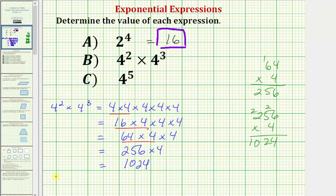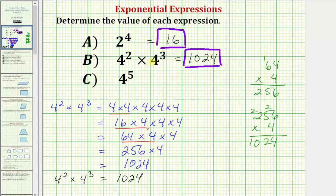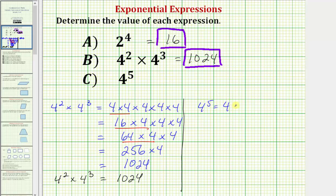So four to the second power, or four squared, times four to the third power, or four cubed, equals one thousand twenty-four. We'll come back to this after looking at part c. For part c, we have four raised to the fifth power. Because the exponent is five, we have five factors of four, so four to the fifth equals four times four times four times four times four. Comparing four to the fifth with four squared times four cubed, notice that in both cases we have five factors of four, so four to the fifth is also one thousand twenty-four.